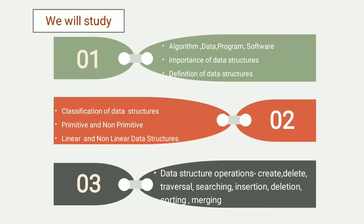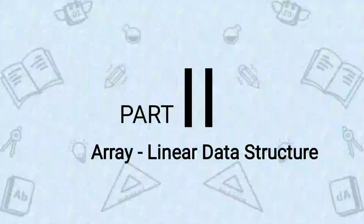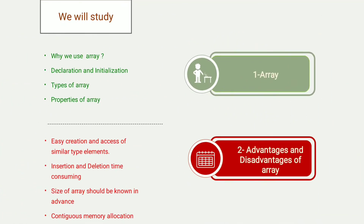These three videos cover the introduction part of data structures. In part two we will learn array, which is an example of a linear data structure. In the first video we will learn what is an array, why we use it, declaration and initialization of array, and types of arrays and properties of array. In the second video we will learn advantages and disadvantages of array.